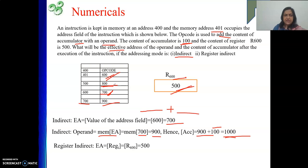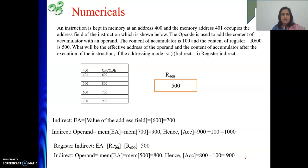Register indirect content of any register, here it is R600, so it is 500. That is EA. Where is my data? At memory location 500. What is that? 800. 800 plus accumulator, so it will be 900. Result is 900. This was very simple. It is a kind of repetition, but it will give us good practice.